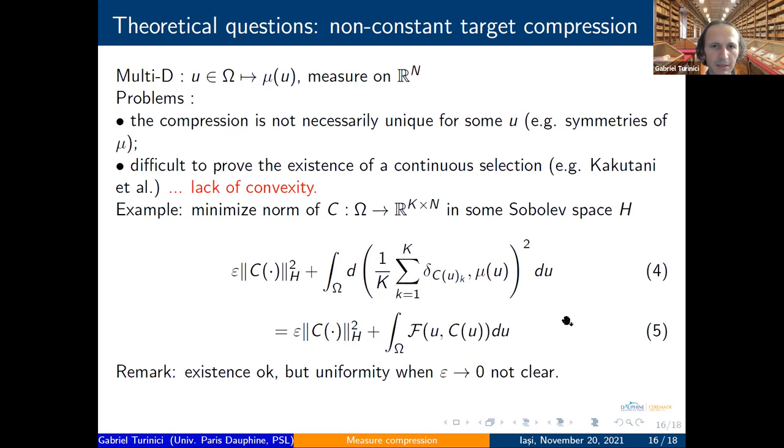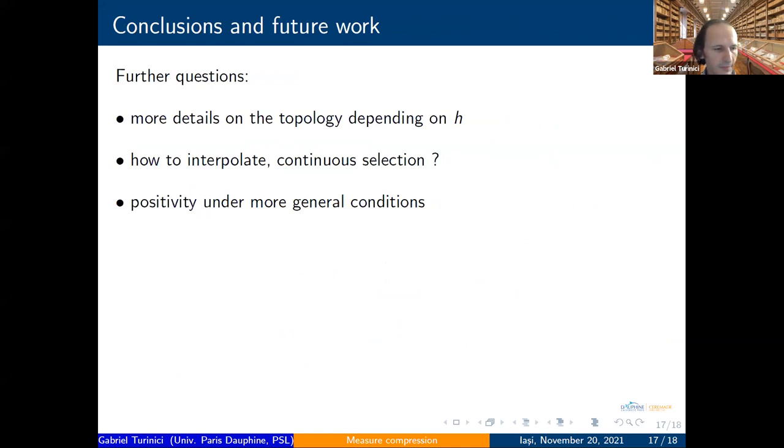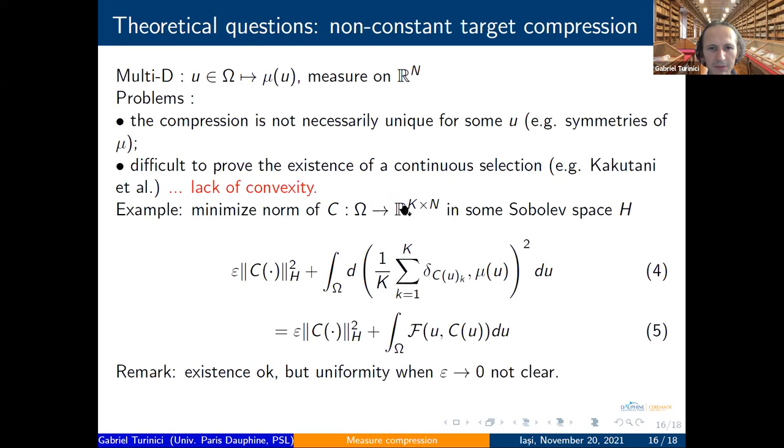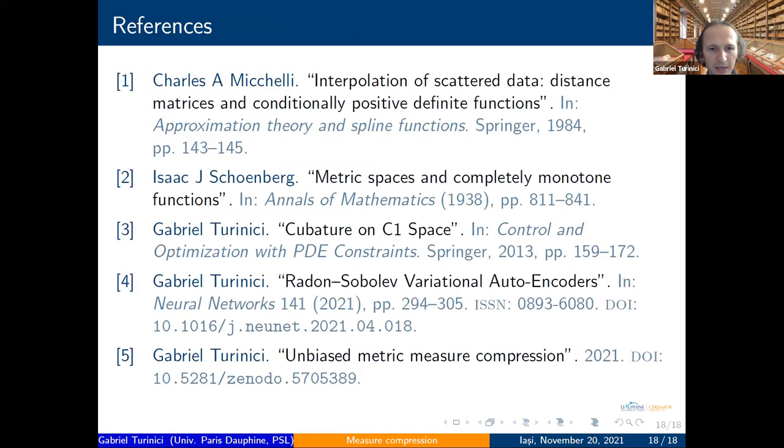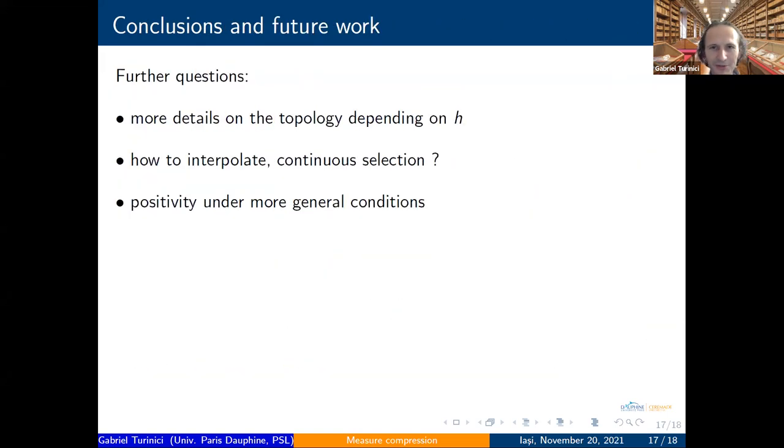I put here three more or less open questions I discussed. I discussed less on the topology. The general question of how to characterize the topology for kernels K—this is solved in some cases, but information is still needed. The question of continuous selection and the question of positivity under more general conditions are still open and need some details. Here there are some references. Thank you for your patience.